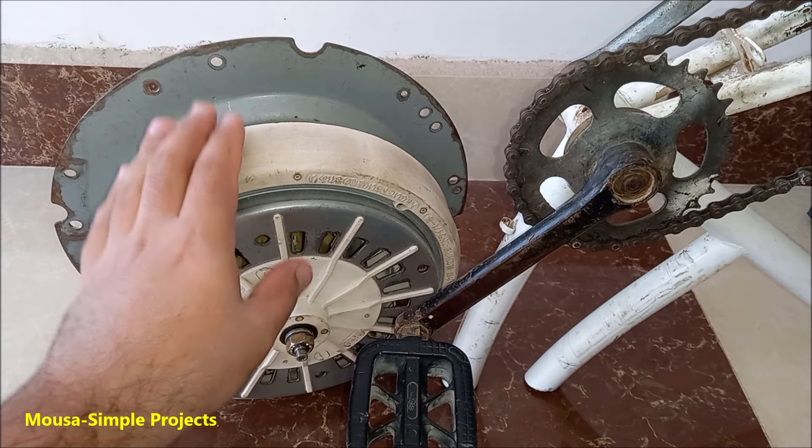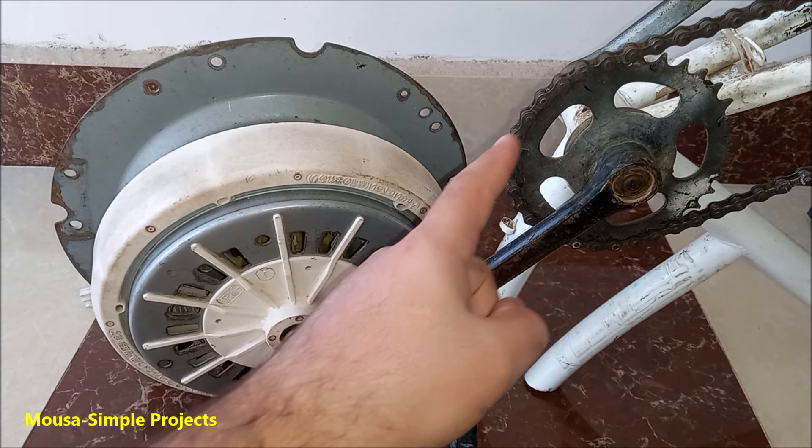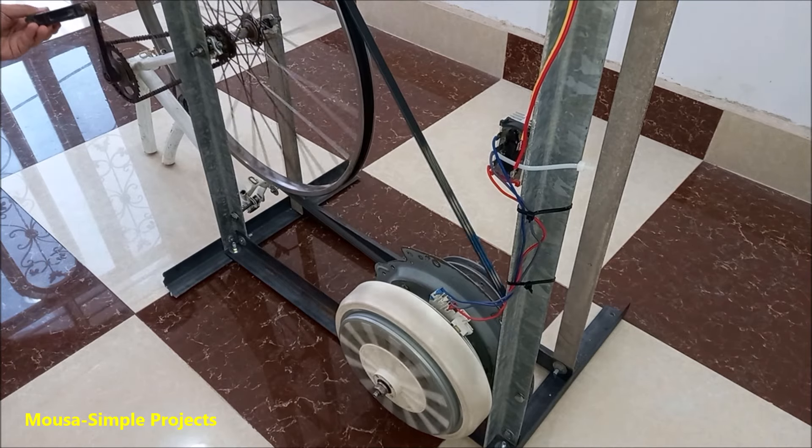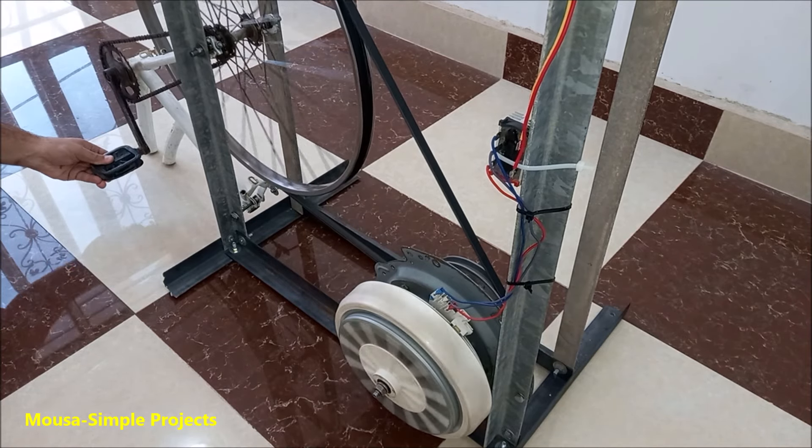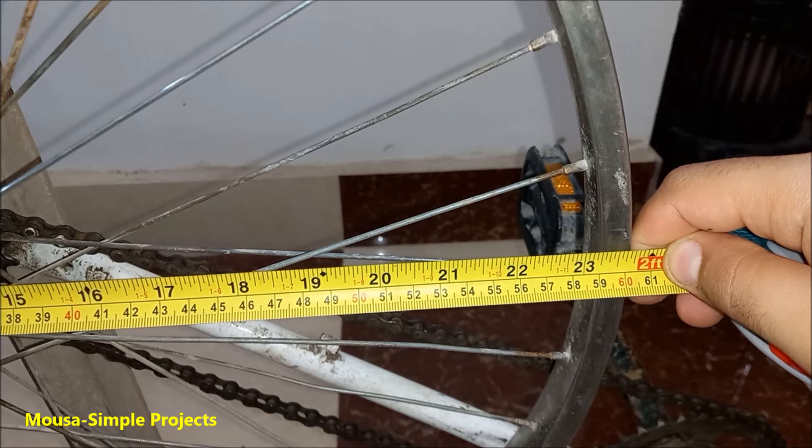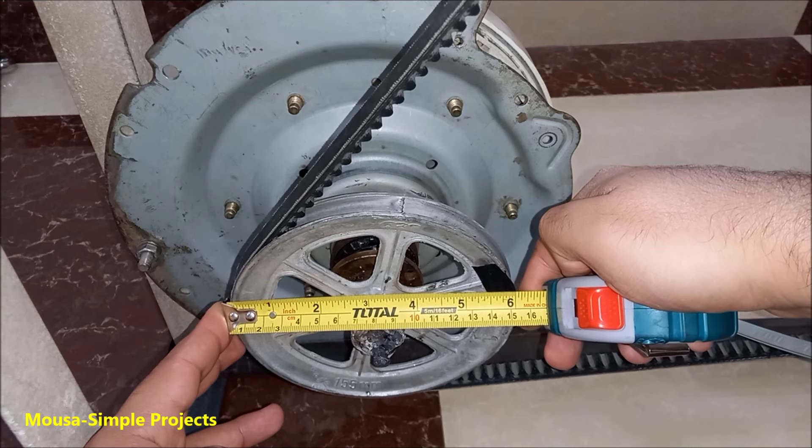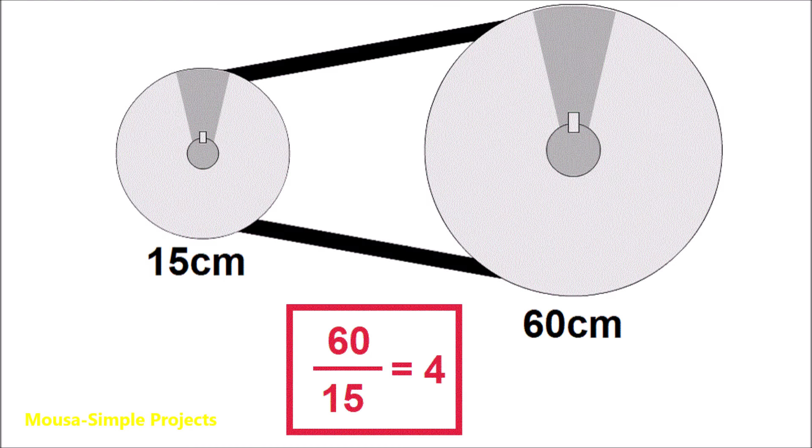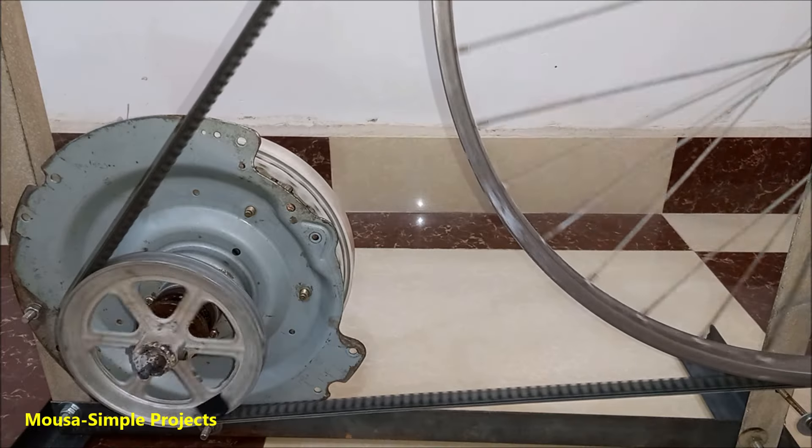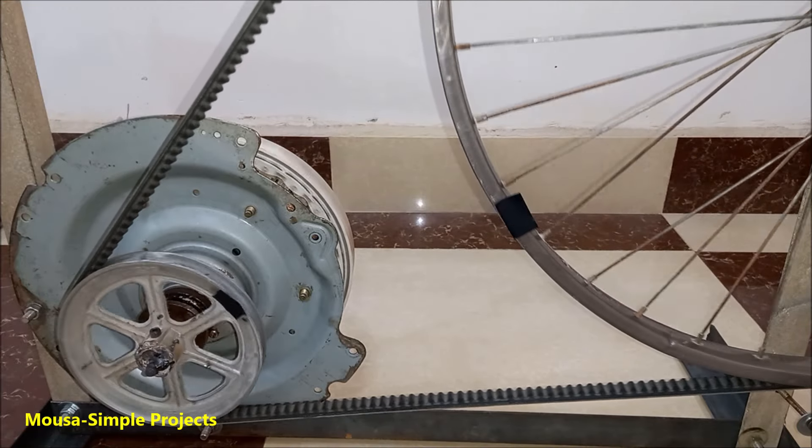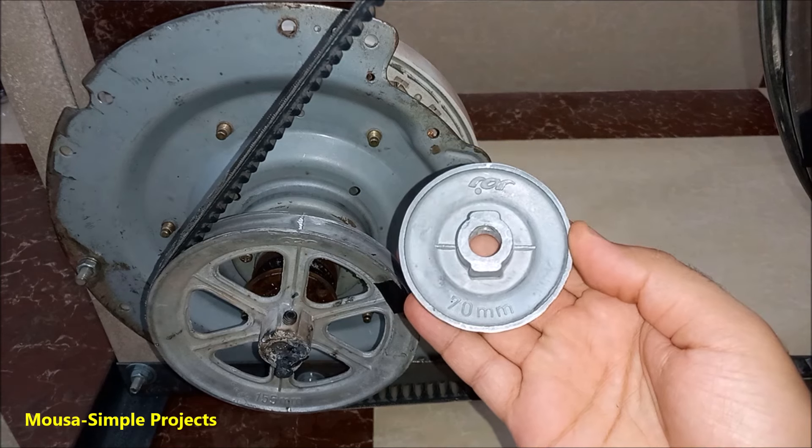Maybe you're wondering why I didn't connect the generator directly to the pedals instead of using a chain wheel and belt. Because by this method we can increase the rotation speed of the generator. The ratio of wheel diameter to pulley diameter determines how fast the generator rotates. This ratio here is four, that means when the wheel rotates one full cycle, the pulley rotates four times. I don't recommend you use a very small pulley because the pedaling becomes very hard and the belt starts to slip.